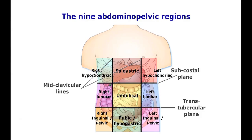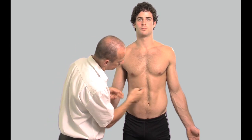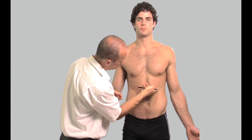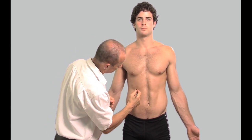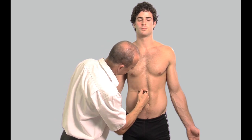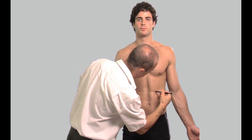The nine abdominopelvic regions. There are two horizontal planes and two vertical planes which divide the abdomen into nine regions or compartments. These regions are important for the definition of organ position and more specific location of symptoms. The superior horizontal plane is drawn at the subcostal plane, that is the level of the 10th costal cartilage.